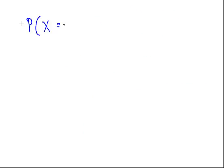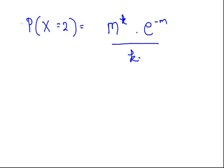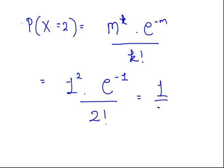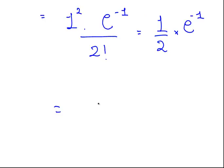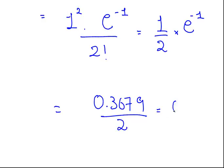Finally, P(X = 2): using the formula with K = 2, that is 1 squared times E to the minus 1, all over 2 factorial. 1 squared is 1, and 2 factorial is 2. So we have E to the minus 1 divided by 2, which equals 0.3679 divided by 2, and that is approximately 0.1839.